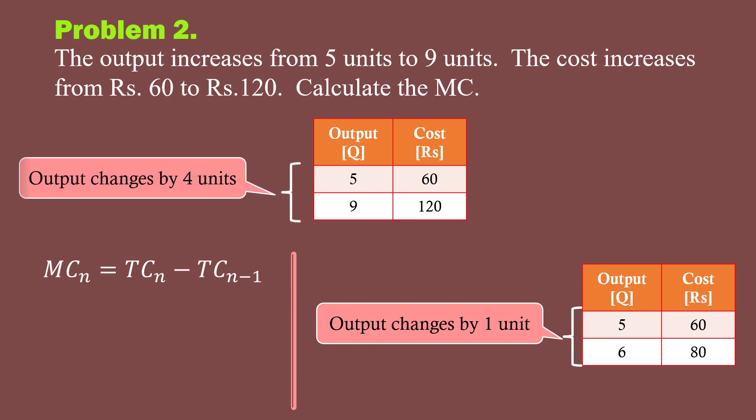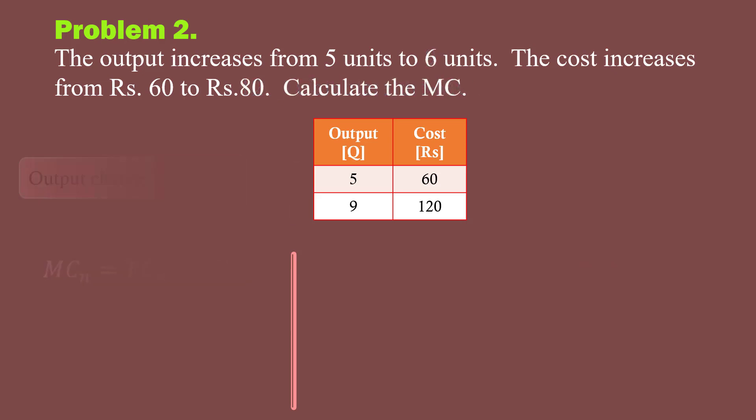In problem 2, output changes from 5 units to 9 units. The change in output is 4 units. Under such conditions, you have to use the formula marginal cost equals delta TC over delta Q. We shall use this formula.